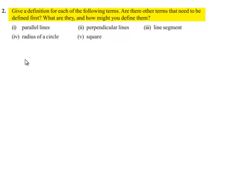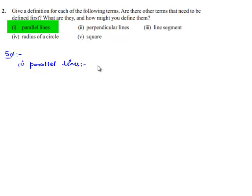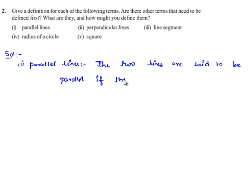Now moving on to the solution, let us consider the first part. Here we're asked the definition of parallel lines. Two lines are said to be parallel if they do not intersect when produced indefinitely.